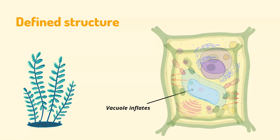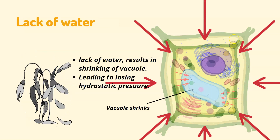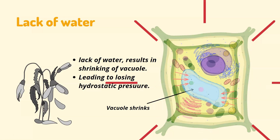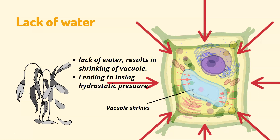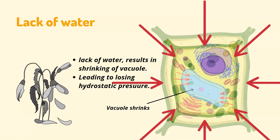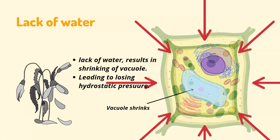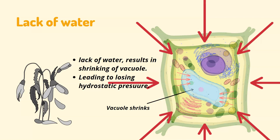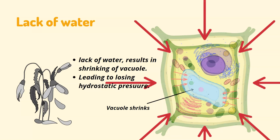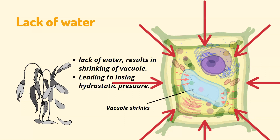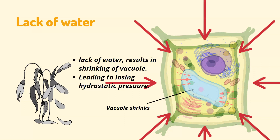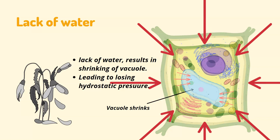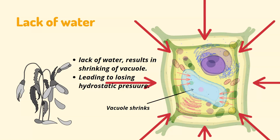On the other hand, when there is a lack of water within the cell or the cell loses water, this causes shrinking of the vacuole. Shrinkage of the vacuole reduces the hydrostatic pressure within the cell against the cytoplasm wall. When that pressure reduces, the cell starts shrinking, leading to loss of rigidity or turgor, and we see a withering plant.